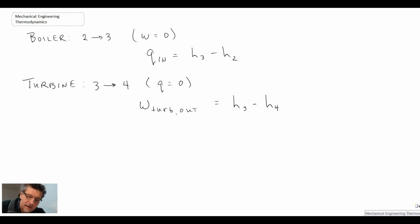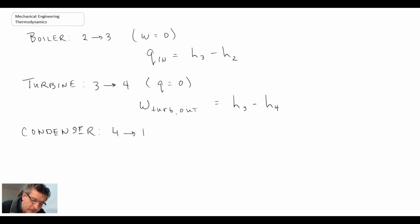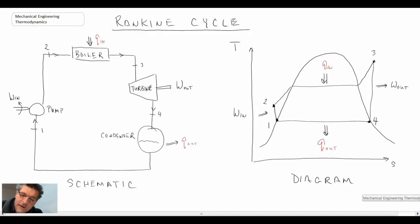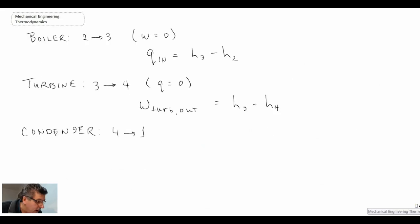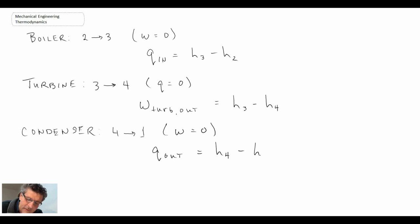The final component is the condenser, going from state four back to state one. The condenser is essentially heat rejection — in an ideal case we go from saturated vapor down to saturated liquid through a phase change. There is no work in the condenser, but there is heat transfer leaving the system. That heat rejected equals the enthalpy at state four minus the enthalpy at state one.